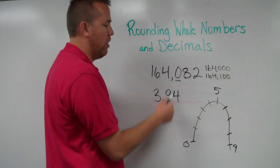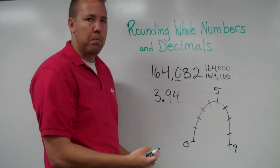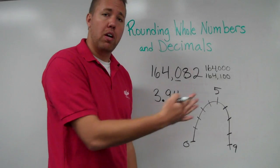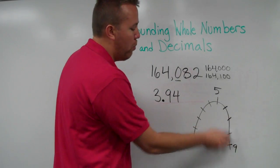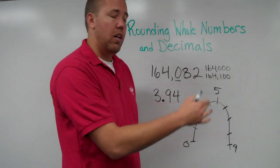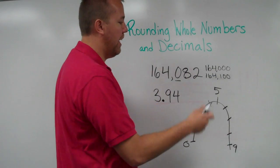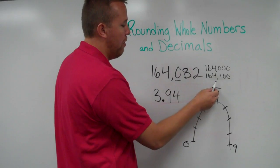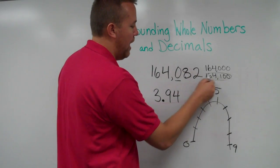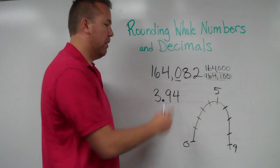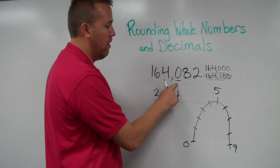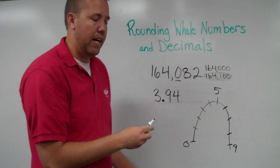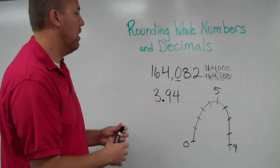So, round to the nearest hundred. We look at this next number. Is it five or higher, or is it less than five? Because eight is higher than five, we would round forward, or higher, to the next highest number. We would round up. So, that would be rounded to 164,100 because this digit, directly to the right of the underline, is five or above. So, we round up.